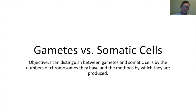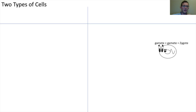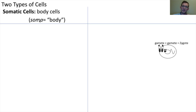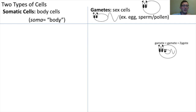Hey, bio team. Cells fall into one of two main types of categories. The first type of cell is a somatic cell, which is just a body cell. The second type of cell is a gamete, or a sex cell.